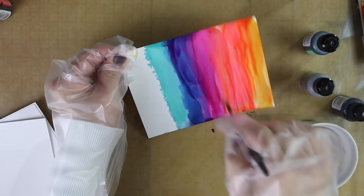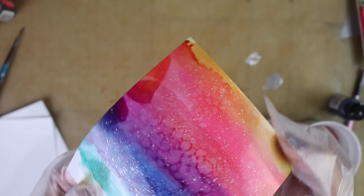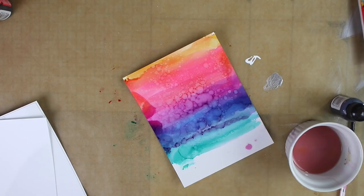I heat this up and then I splatter this paper using that blending solution as well and also the metallic alcohol ink.